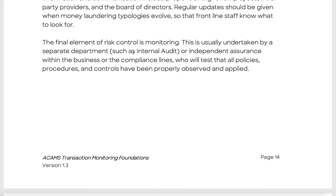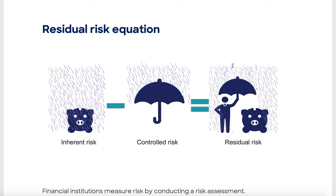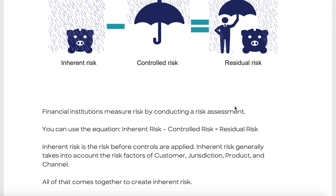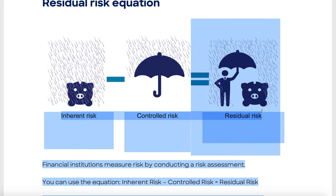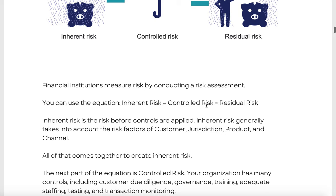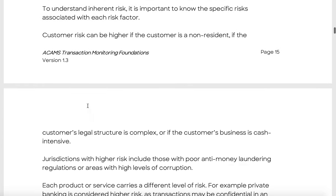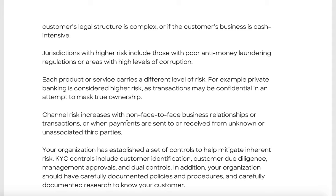The final element of risk control is monitoring, undertaken by a separate department such as internal audit — the third line of defense — or independent assurance within the business. Compliance tests that policies, procedures, and controls are properly observed. Residual risk is calculated as: inherent risk minus controlled risk equals residual risk. There will definitely be a question on this in the exam — one hundred percent. Make sure you know it.